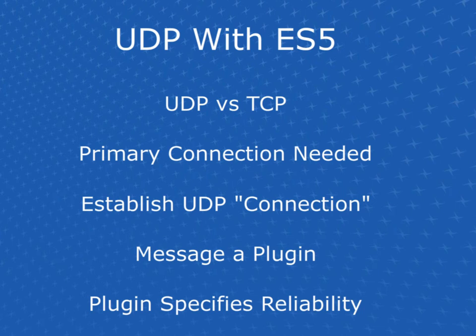But we still call it a connection with the ElectroServer API because we set it up to work as if it were a connection. When you attempt to establish a UDP connection with ElectroServer, there's a little bit of handshaking that goes on between the client and the server. If the handshaking fails, an event is dispatched saying the UDP connection failed. If the handshaking succeeds, a message is dispatched saying the connection succeeded. So once we have a primary connection established, we can then establish a UDP connection.